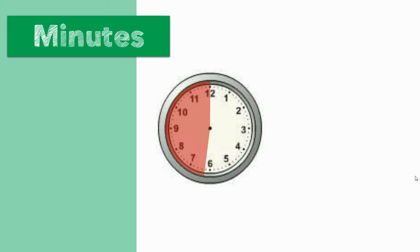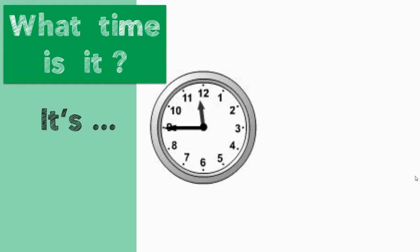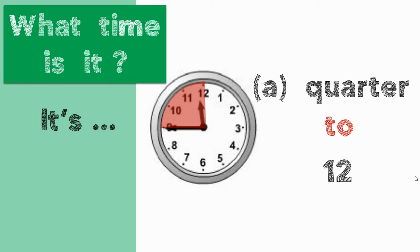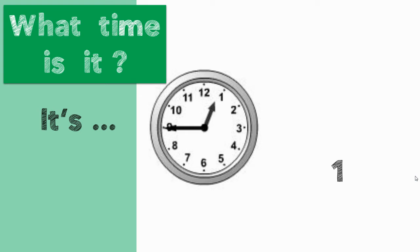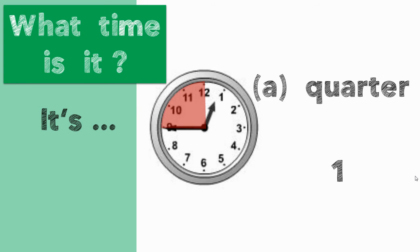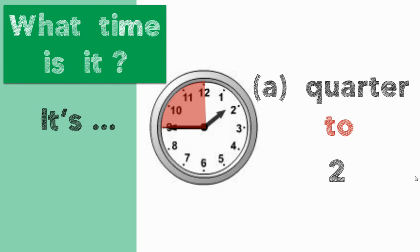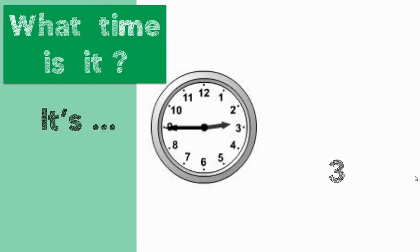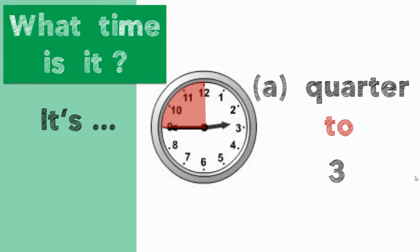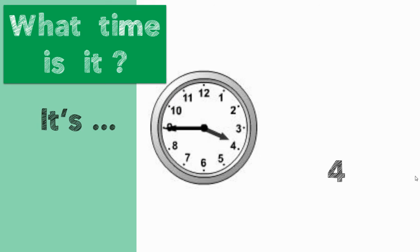When the minute hand is on the left-hand side, we say 'to.' For example, what time is it? You can see that it's nearly twelve o'clock — it will be twelve in fifteen minutes, so we say it's a quarter to twelve. It's nearly one o'clock — it will be one in fifteen minutes — it's a quarter to one. It's nearly two o'clock — it's a quarter to two. It's nearly three o'clock — it's a quarter to three.